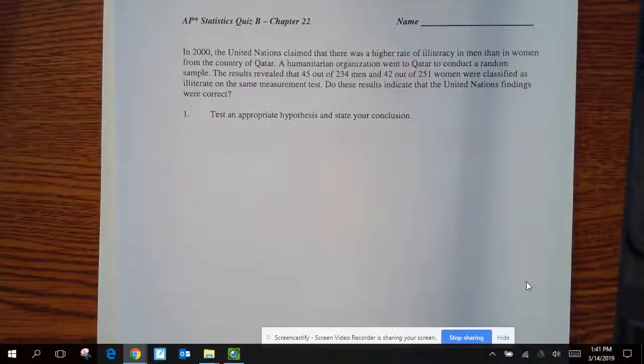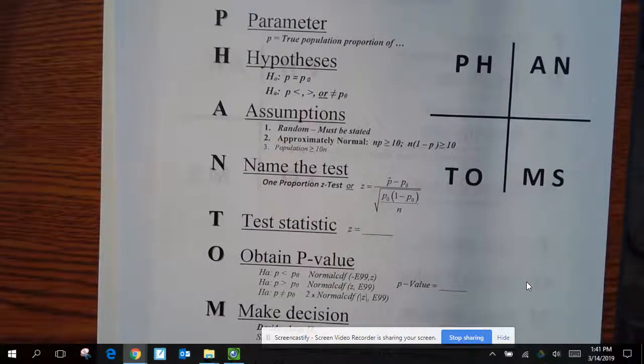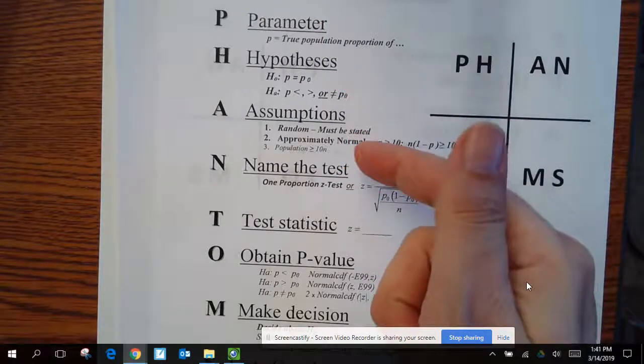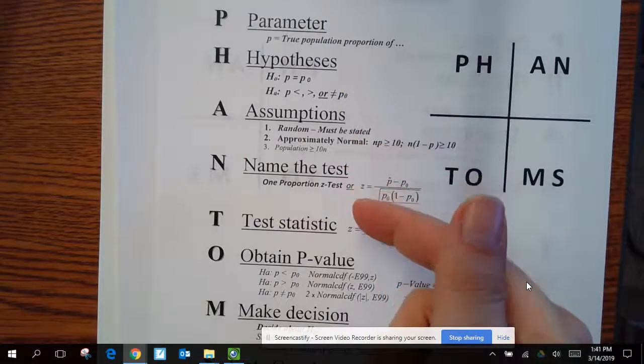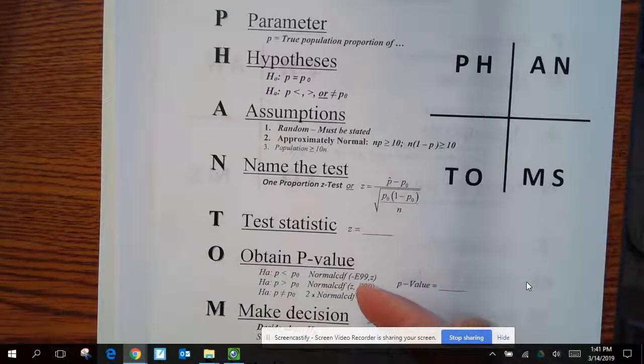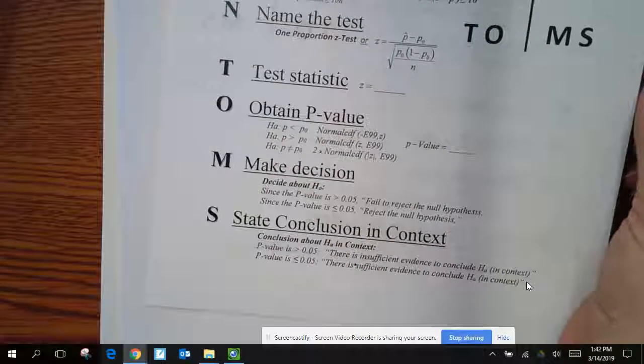All right, so we're going to try out using this new system called PHANTOMS. Remember, for some of our hypothesis testing, we're going to use the parameter, then name our hypotheses, then our assumptions, name the test, give the test statistic, obtain a p-value, make a decision, and finally state our conclusion in context.